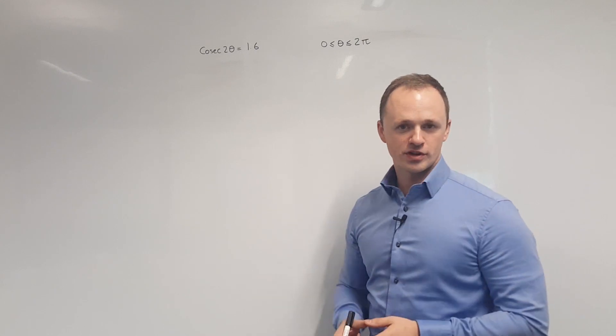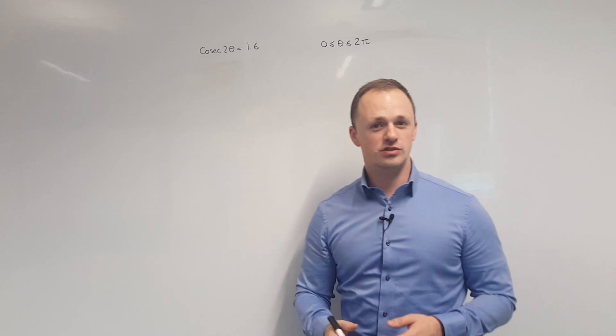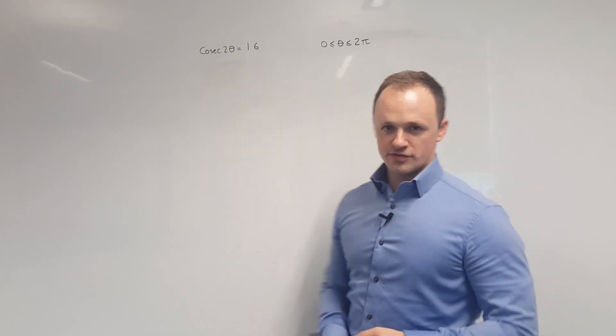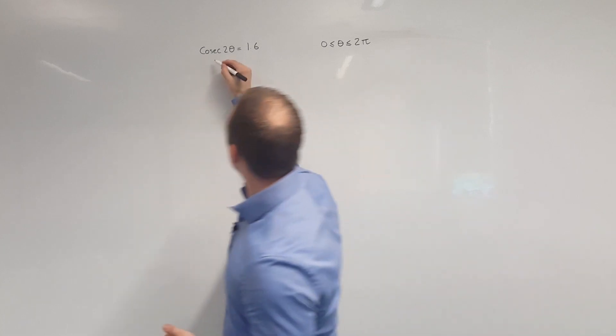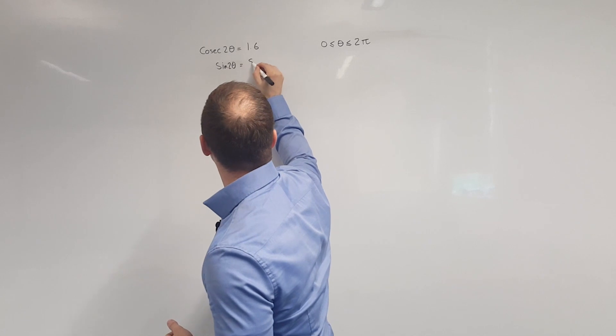Welcome back. Hope you've had a go at this one first. We're solving cosec 2θ equals 1.6 in the region 0 to 2π. First of all, we're going to take the reciprocal of both sides. 1.6 as a fraction is 8 fifths. So when we do the reciprocal, we can write that as sine 2θ equals 5 over 8.